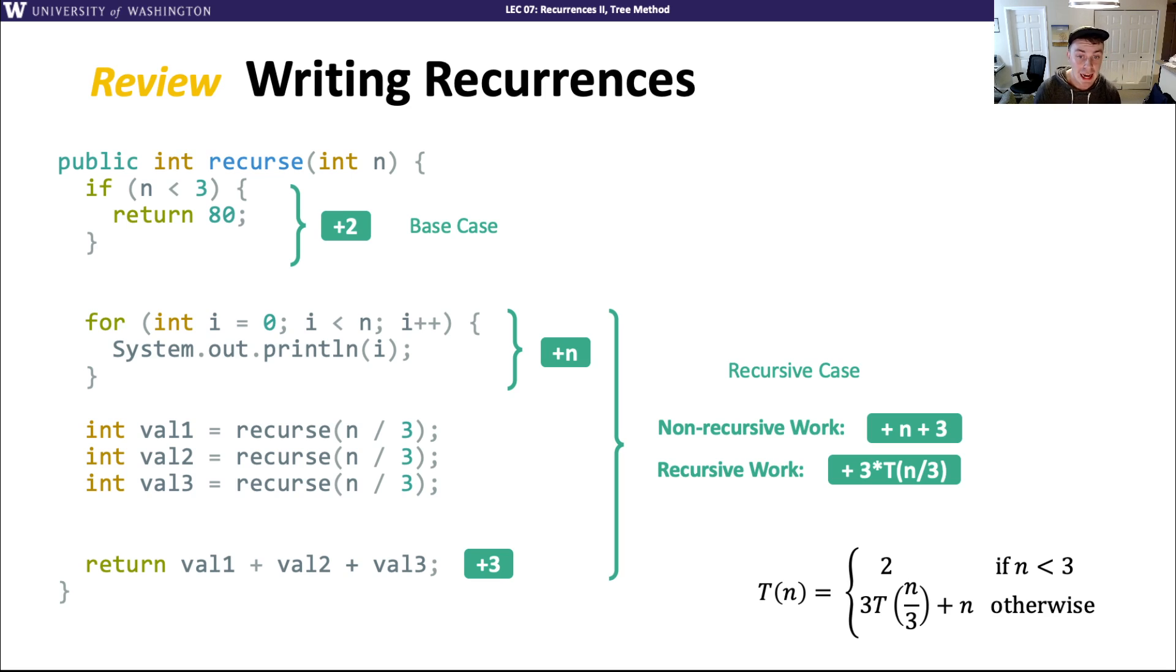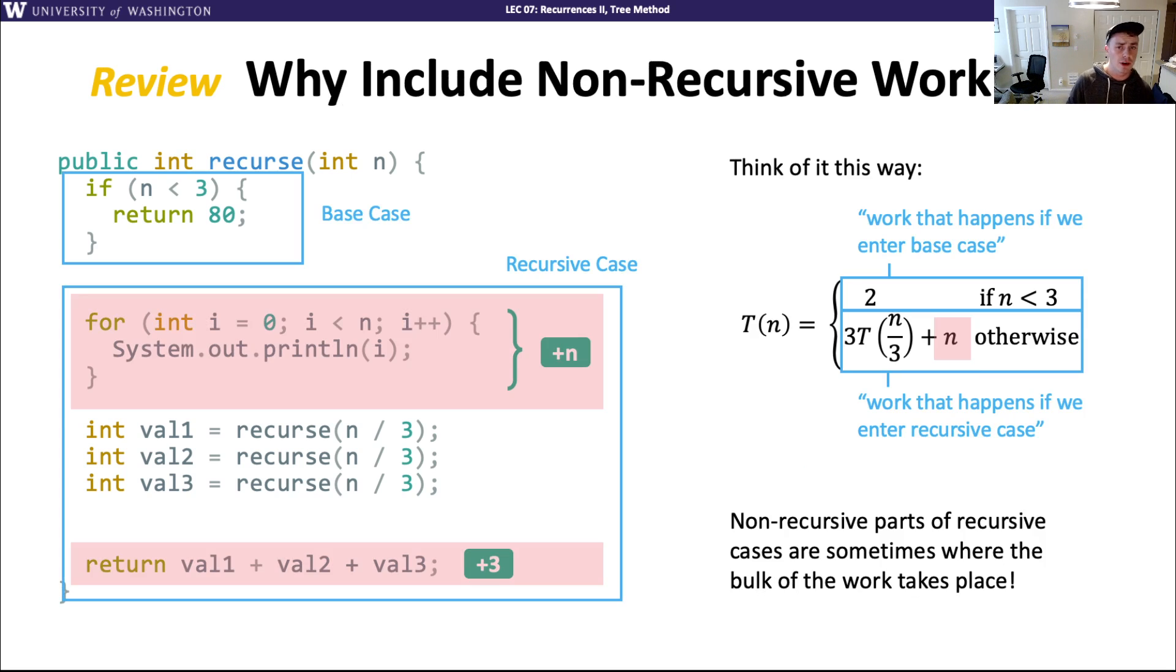We came up with this t function that describes the runtime of the code. t of n is a function that describes for any input size n how many steps it will take to run. For the base case there's something like two steps there. That's straightforward. In the recursive case we add up our non-recursive work, the code that's not about recursion. We have a for loop that loops n times and a return statement that's constant work. So our non-recursive work is plus n plus three.